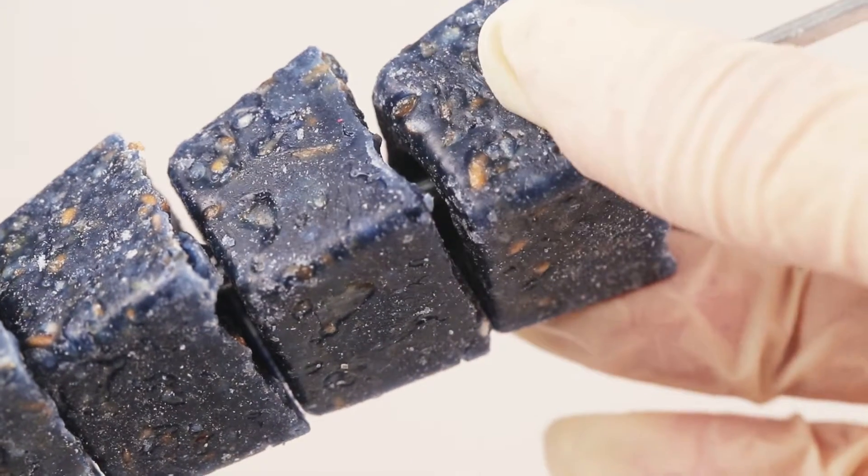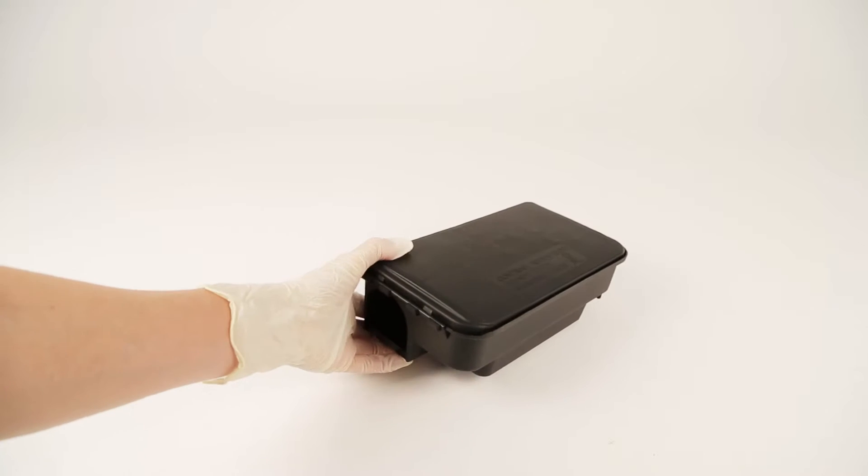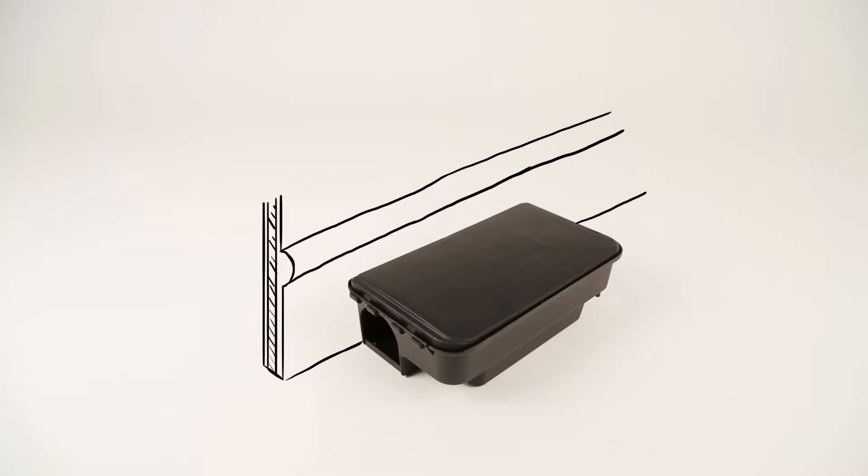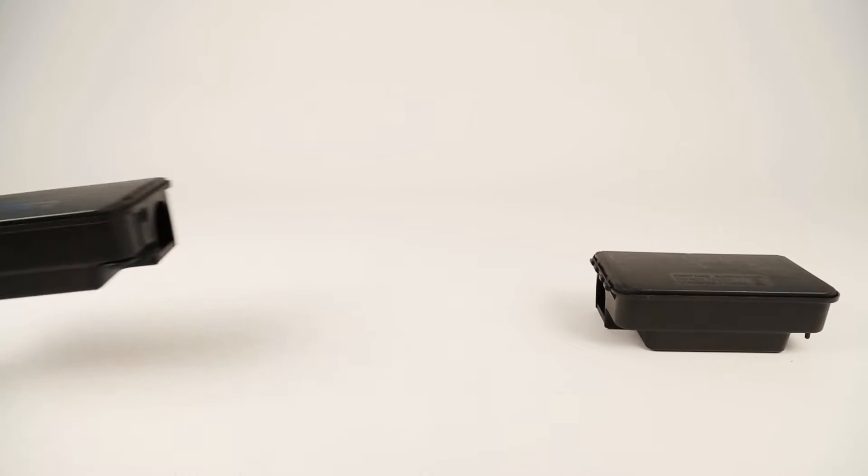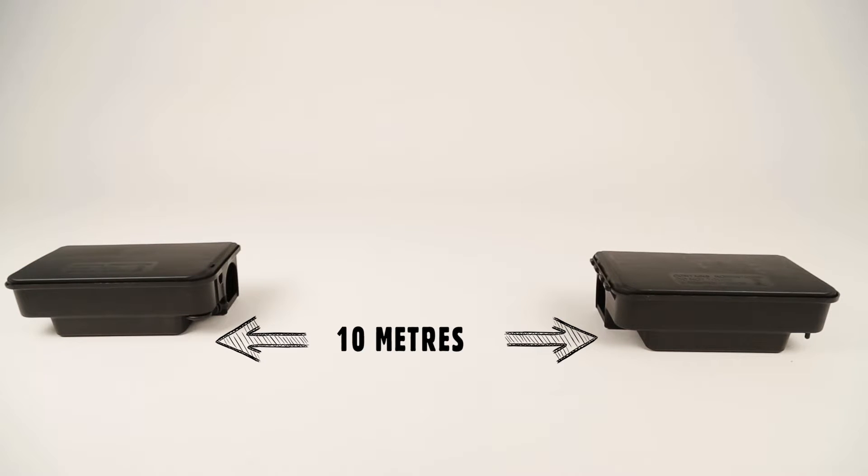Place the blocks inside a bait station. Position the bait station against a wall with the entry hole adjacent to the wall where there are signs of rodent activity. In large treatment areas or where there is a severe infestation, place the bait stations up to 10 metres apart.